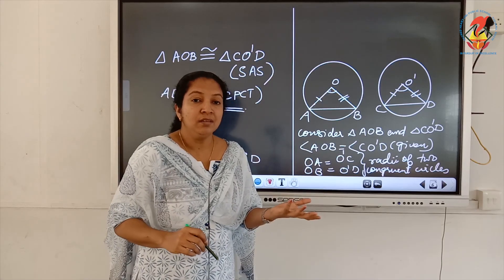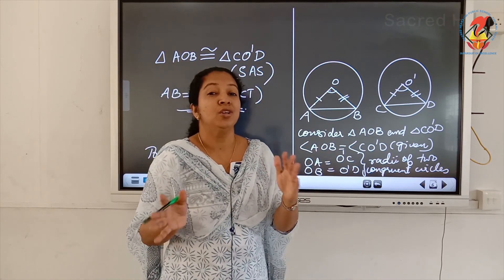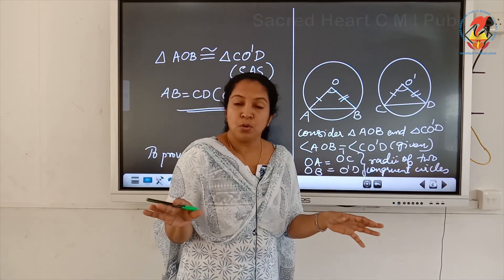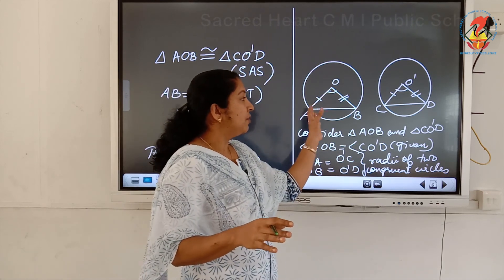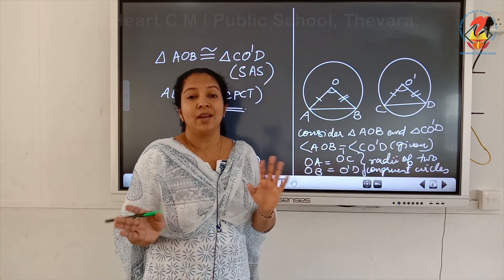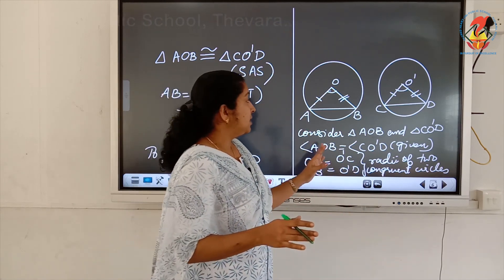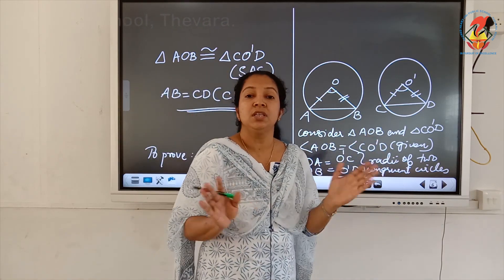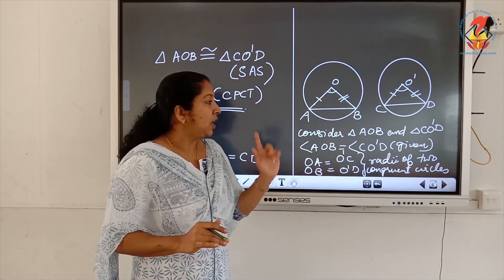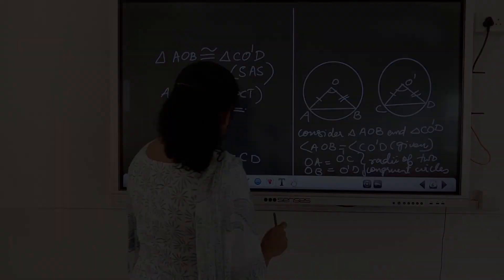Summary: What is given is that angles made by two chords at the centers are equal, in congruent circles. Using OA equals O dash C and OB equals O dash D as radii, and SAS criterion, the triangles are congruent. Therefore AB equals CD by CPCT.